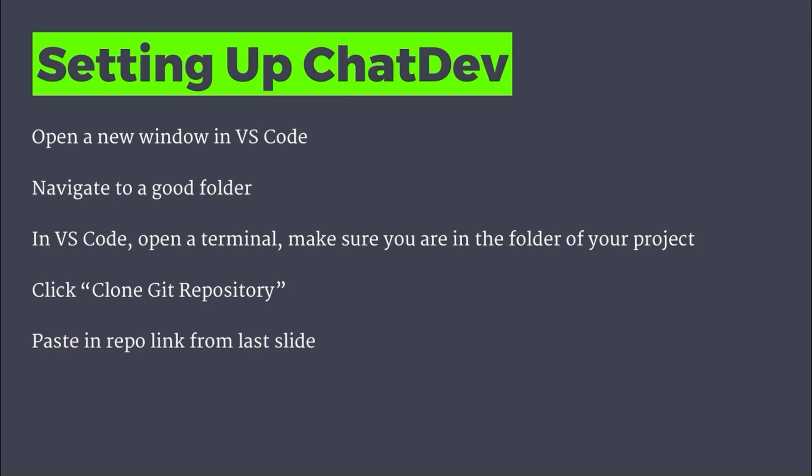So the steps here are we're going to go into VS Code, we're going to navigate to a new folder. And inside VS Code, we're going to open a terminal and make sure that you're in the folder of your project. We're going to click on Git Clone, Get Repository, and we're going to paste that link that we just found into there. And if this is all new to you, don't worry, just follow along with this and go back and watch my getting started quick start to Git repositories.